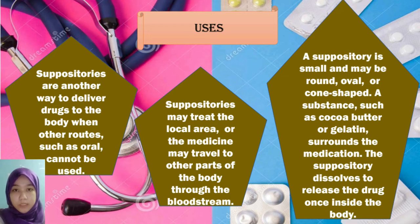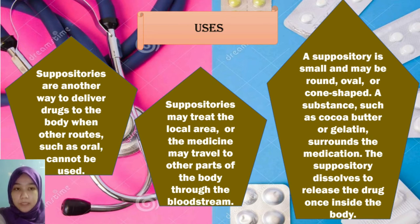The uses: First, suppositories are another way to deliver drugs to the body when other routes such as oral cannot be used. Second, a suppository is small and may be round, oval, or cone shaped. A substance such as cocoa butter or gelatin surrounds the medication. The suppository dissolves to release the drug once inside the body. Third, suppositories may treat the local area, or the medicine may travel to other parts of the body through the bloodstream.